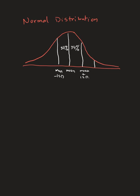Going a little further, 95% of the data falls within the mean plus two standard deviations and the mean minus two standard deviations. The individual pieces between one and two standard deviations are each 13.5%, and all four sections add up to 95%.